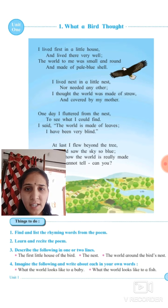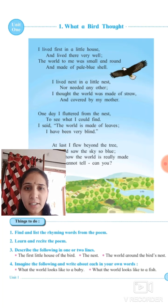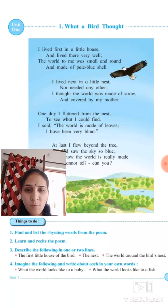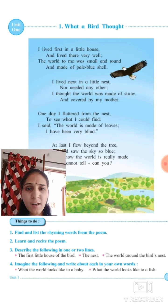the poet says that the bird's first house was very little. Uska jo pehla house hai, jahan peh woh sabse pehle aya, it was very little — woh bahut chhota hai. And he lived there very well — woh wahan pe bahut comfortable, achhe se rah raha tha.